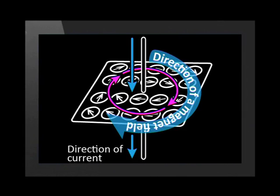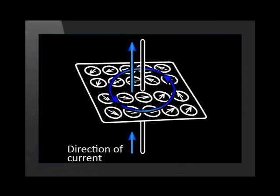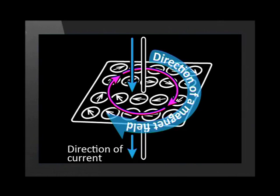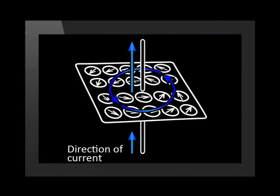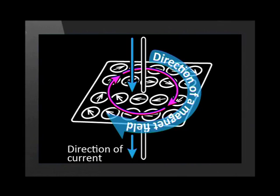Now what happens if the current direction changes back and forth? Watch this. Do you see? The magnetic field changes direction each time the current changes direction.